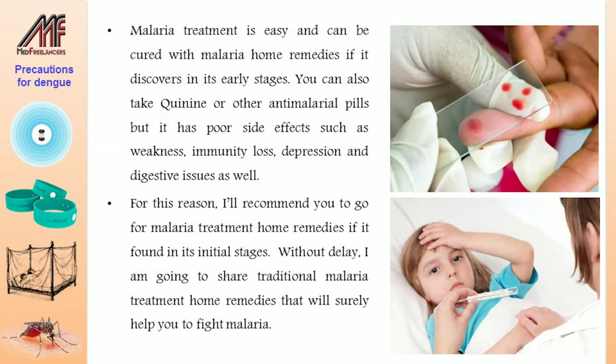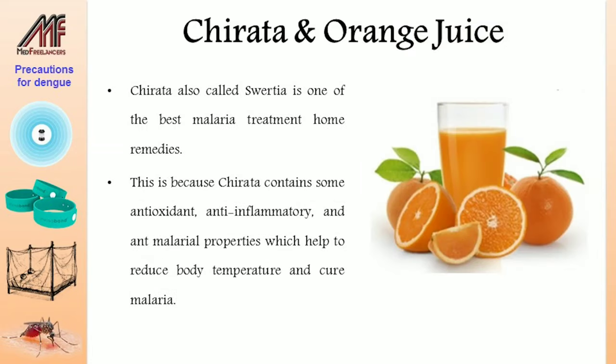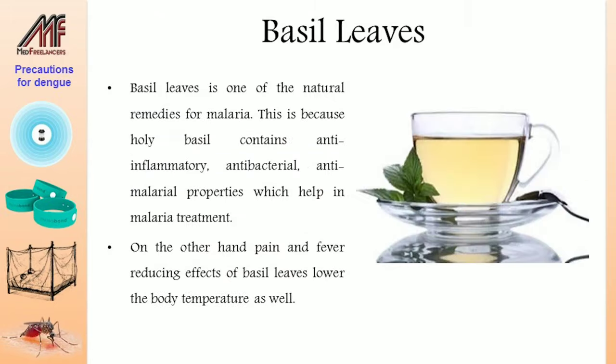I am going to share traditional malaria treatment home remedies. Kirita, also called swirsa, is one of the best malaria treatment home remedies because it contains antioxidant, anti-inflammatory, and anti-malarial properties which help to reduce body temperature and cure malaria. Basil leaves are also one of the natural remedies for malaria.